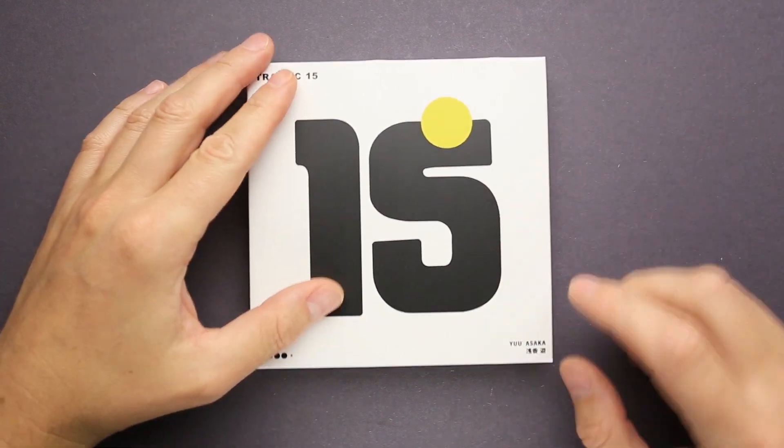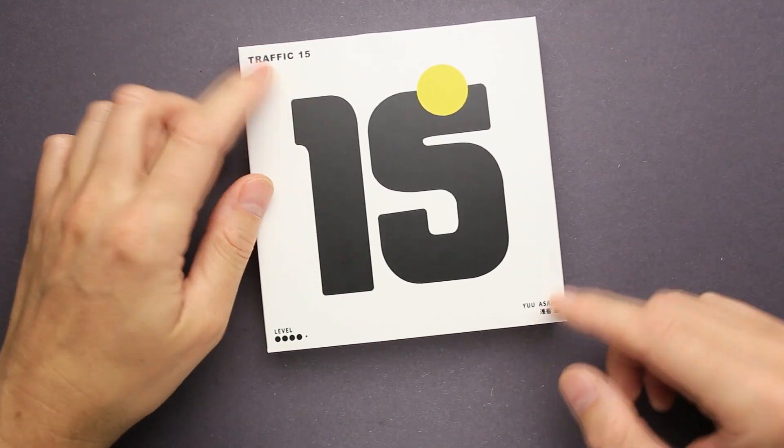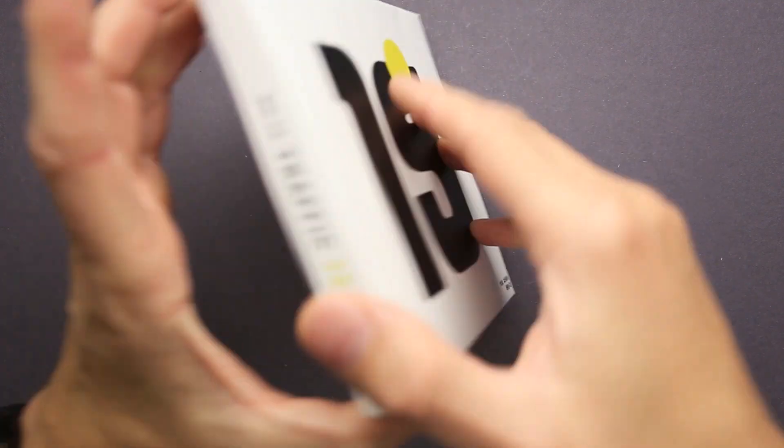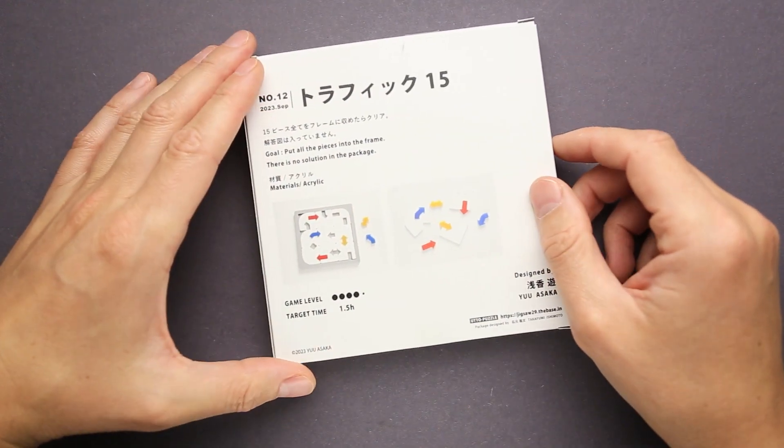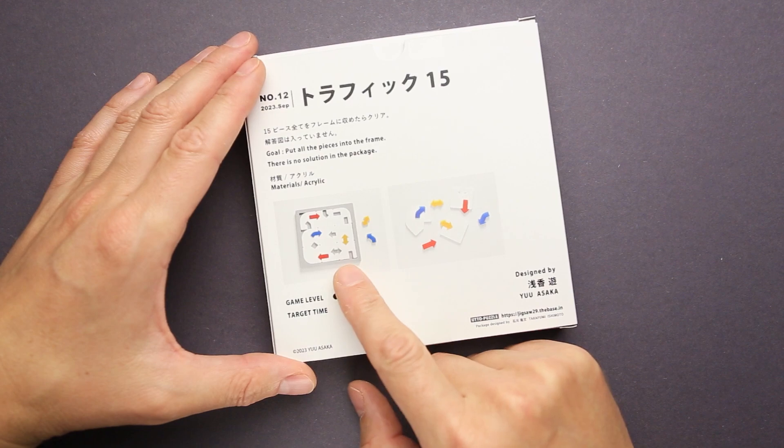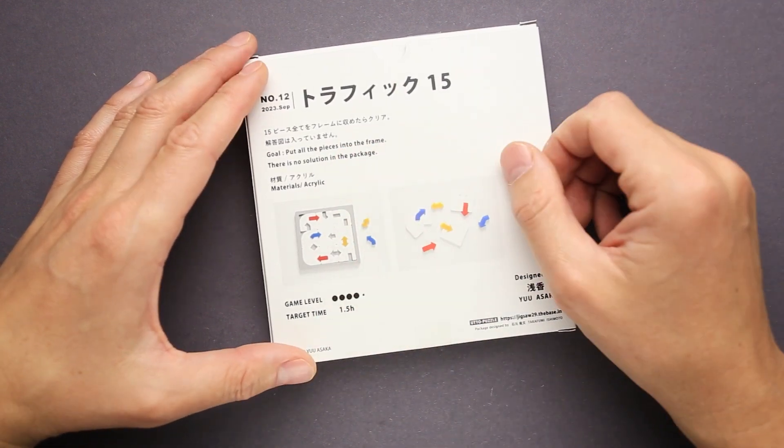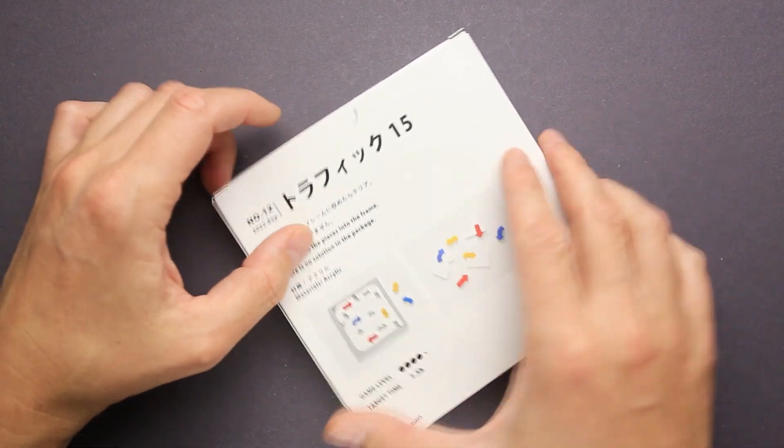Hey there. Today I'm having a new puzzle from Yusaka. It is called Traffic 15. Level is four out of five and the goal is to put all pieces into the frame. There is no solution in the package. Target time one and a half hour.